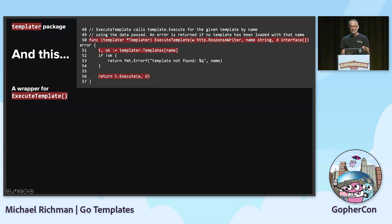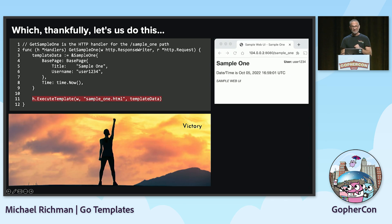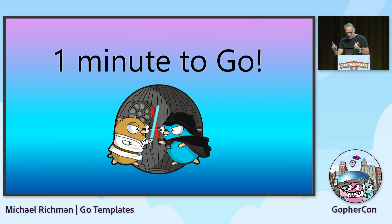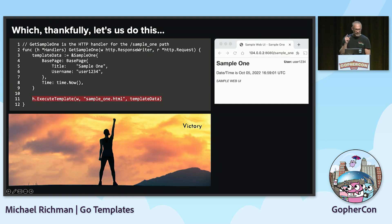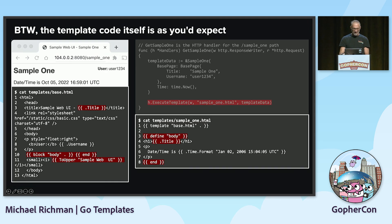ExecuteTemplate is really simple: look up the template by name in the map and execute it at line 56. This lets me do what I wanted at line 11 — execute a template for this ResponseWriter, for this HTML by name, and pass it this data.